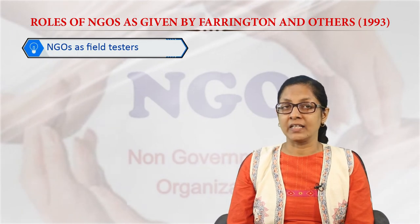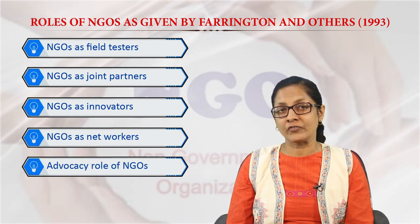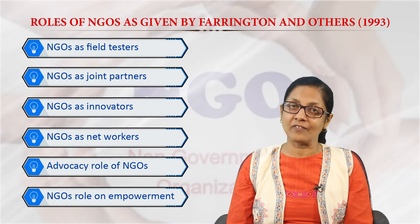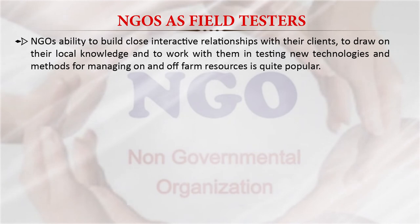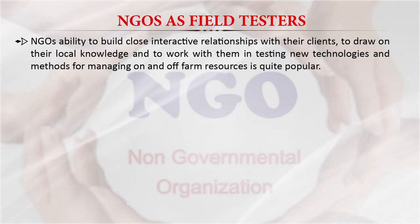Now we come to another concept given by Farrington, which describes the roles of NGOs as joint partners, networkers, advocacy role, and empowerment role. As field testers, NGOs have the ability to build close interactive relationships with their clients, develop local knowledge, and work with them on new technologies and methods for managing on-farm and off-farm resources.